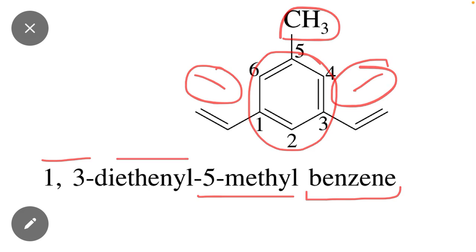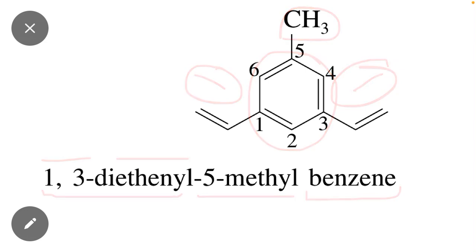One comma three diethenyl five-methyl benzene. I hope that all the students understand how to write the IUPAC name of this compound.